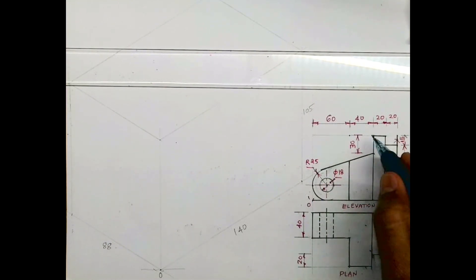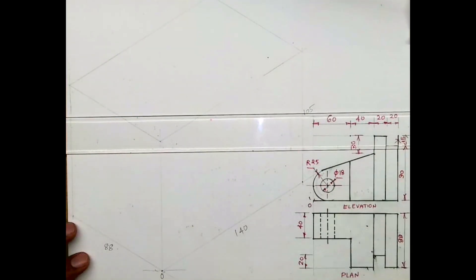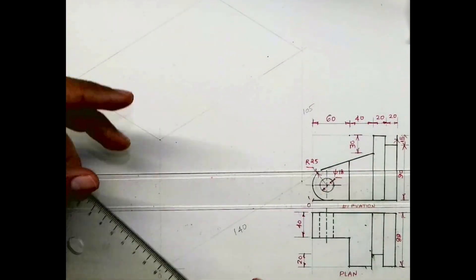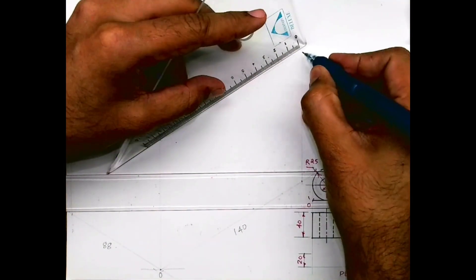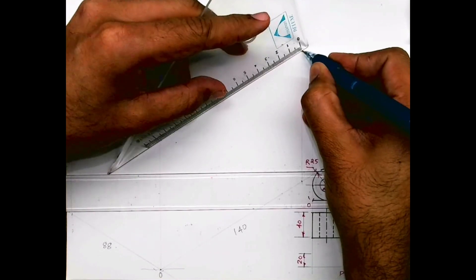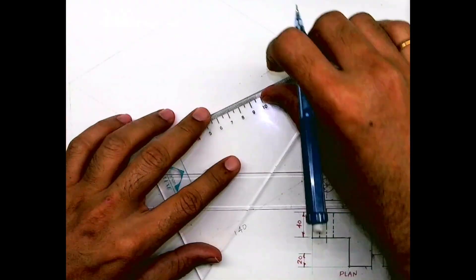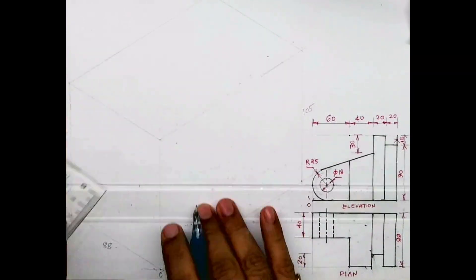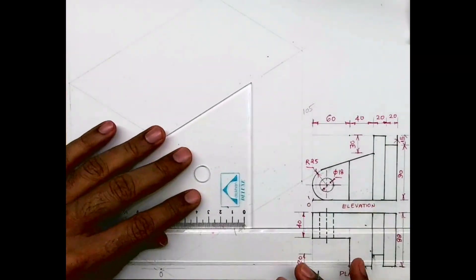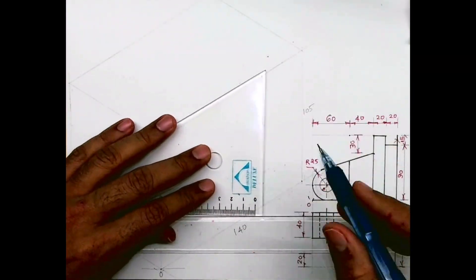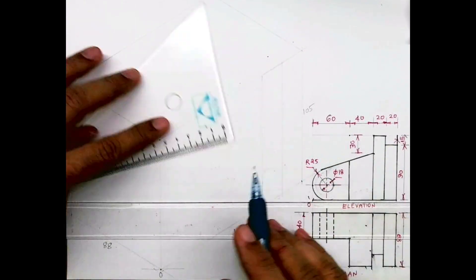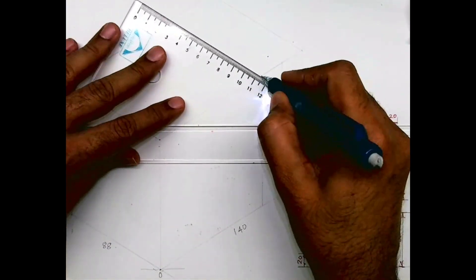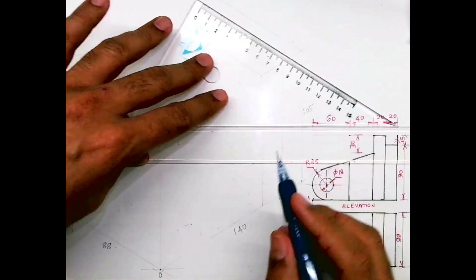We'll start with this part. There is a slope over here — the slope is important. But before that we'll mark this 20, 20, 40. I'll be drawing light first. There are two rectangles of 20 by 28 so that I can take it behind also.